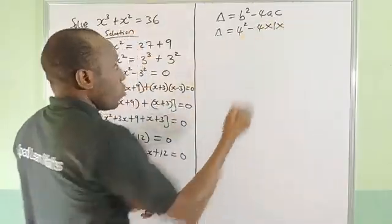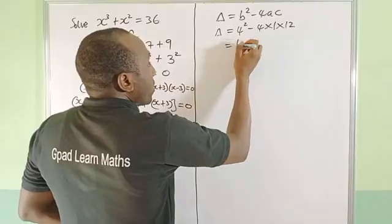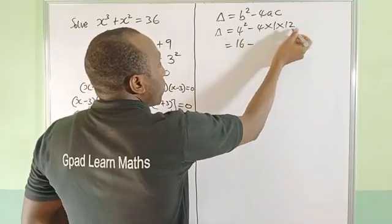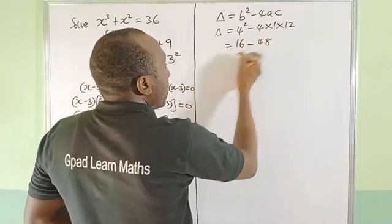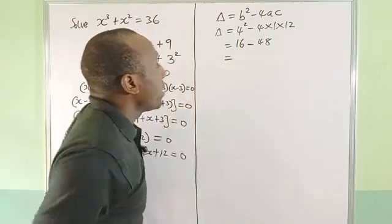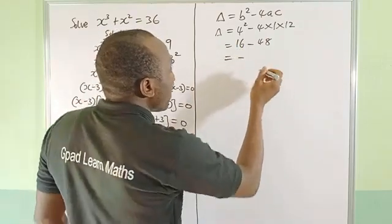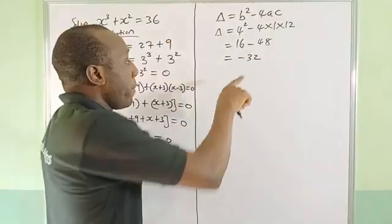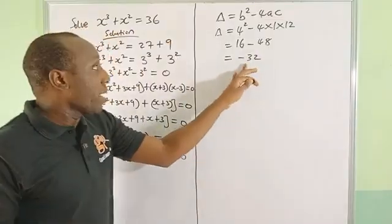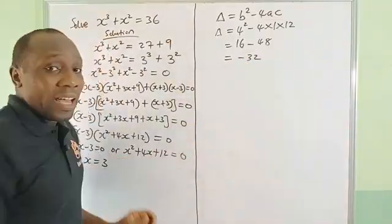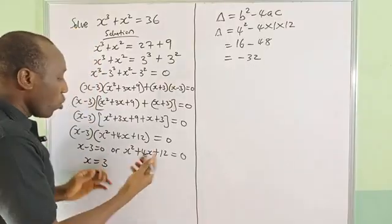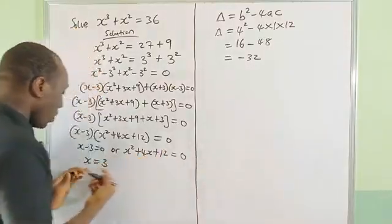And c is 12. So this is 16 - 4 × 12 is 48. If you do this, 16 - 48, that will be -32. Because of the negative value here, it means that this quadratic equation has an imaginary root and we're not going to bother with that. So x = 3 is one of the solutions.